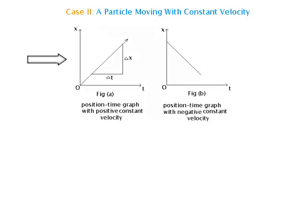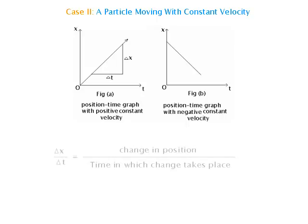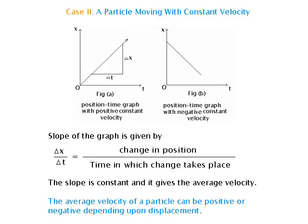Case 2 — A particle moving with constant velocity. One figure shows the position-time graph with positive constant velocity, and another shows it with negative constant velocity. The slope of the graph is given by Δx upon Δt, equal to change in position upon time in which the change takes place. The slope is constant and gives the average velocity, which can be positive or negative depending upon displacement.